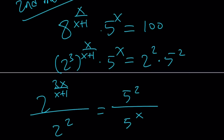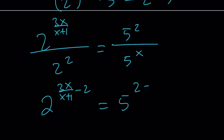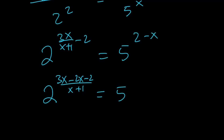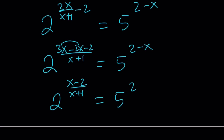Notice I put the 5s and 2s together. Subtracting the exponents: 2 to the power (3x over (x+1) minus 2) equals 5 to the power (2 minus x). Making a common denominator gives (3x minus 2x minus 2) over (x plus 1) equals 5 to the power (2 minus x). This simplifies to (x minus 2) over (x plus 1) equals 5 to the power (2 minus x).